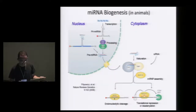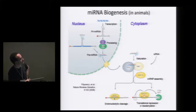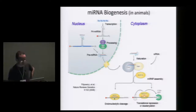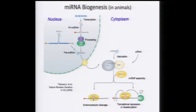They are transcribed in the nucleus to primary transcripts, processed into pre-microRNA, matured in the cytoplasm, and the mature single-stranded microRNA is incorporated into an Argonaute protein. The Argonaute is the one that then binds, guided by the small RNA, to its targets.